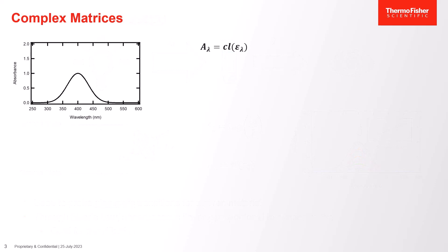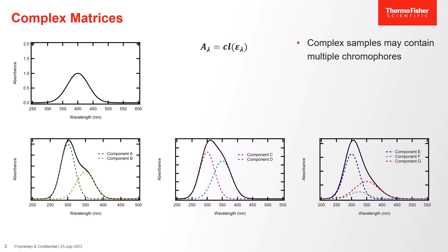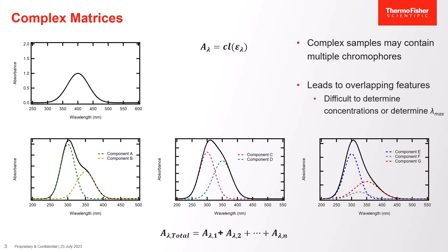Considering that samples are not ideal, we have to consider a complex matrix. Complex matrices can often contain multiple chromophores that have an absorption spectrum, and given that these spectra are fairly broad, it can be easy for them to overlap with one another. From Beer's law, absorption is proportional to concentration, so we would like to use that value to determine the concentration of various components. However, the measured absorption is an additive property — at a given wavelength, the absorption from each chromophore adds up to the total measured value. Analytes can overlap, causing difficulties in determining the concentration of a specific analyte or identifying the lambda max.